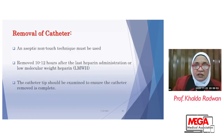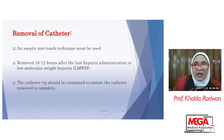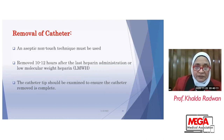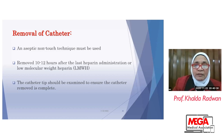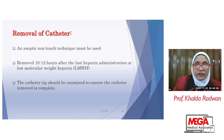For removal of the catheter, an aseptic technique must be used. If the patient is under anticoagulants — receiving heparin or low molecular weight heparin — we must postpone removal until 10 to 12 hours after the last heparin or anticoagulant administration. The catheter tip should be examined to ensure complete removal. After removal, if there is infection, we must perform culture and sensitivity on the catheter tip and give the patient appropriate antibiotics.